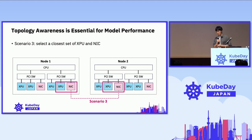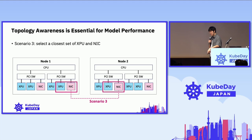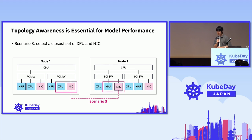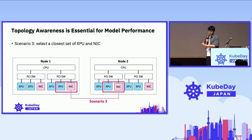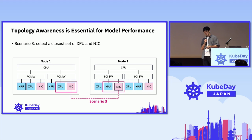Another example is a combination of multiple resource requests over the network. To achieve high-performance training and inference, leveraging high-performance networking is very important. Selecting the closest set of XPUs and NICs is critical. These represent tree-like topologies, but in some cases we also have to consider ring-based topologies to coordinate — depending on how vendors or users implement their XPUs inside the worker node. Those are the use cases and scenarios we want to address.